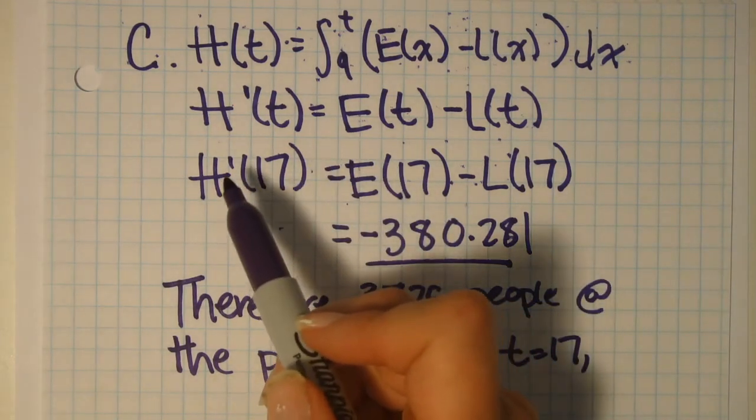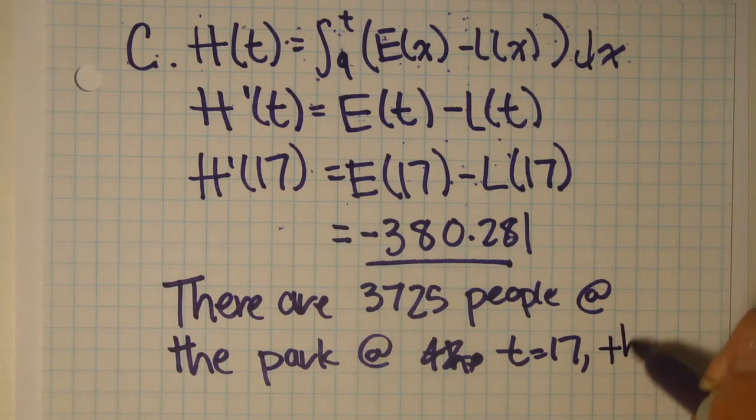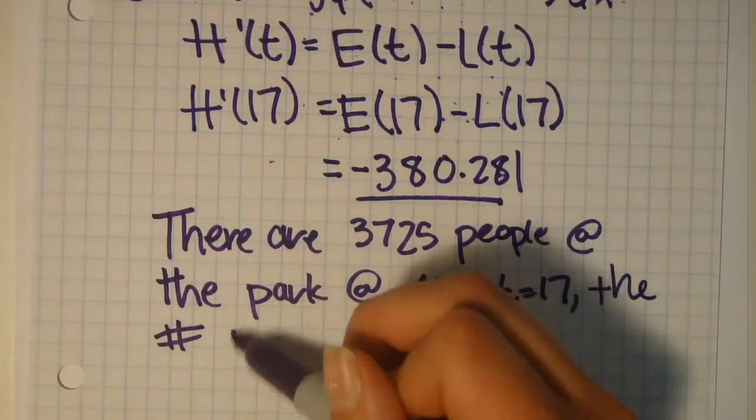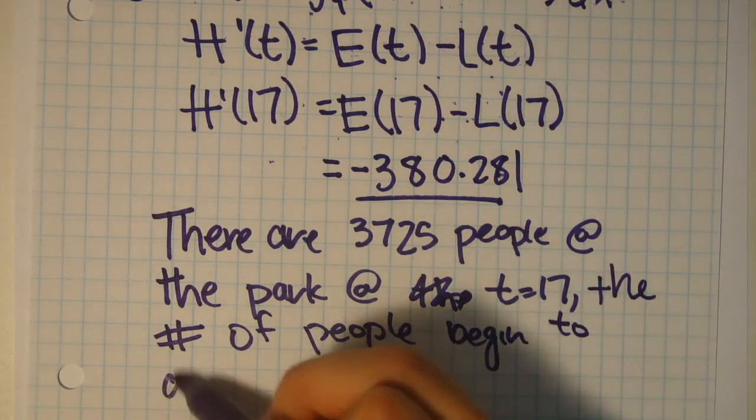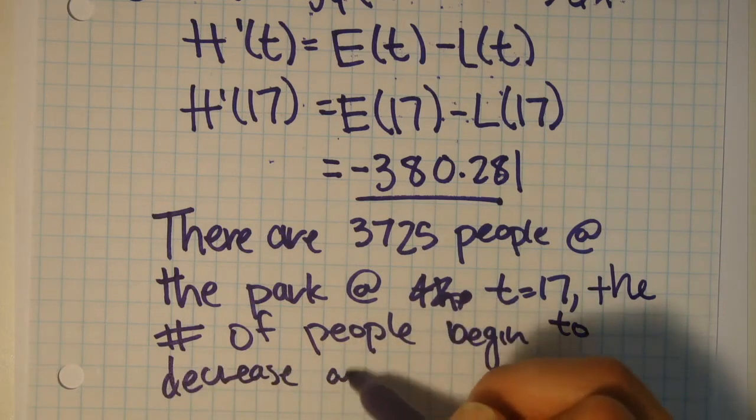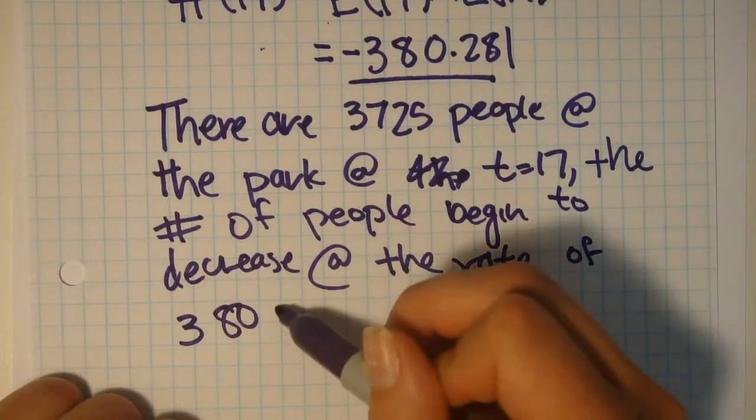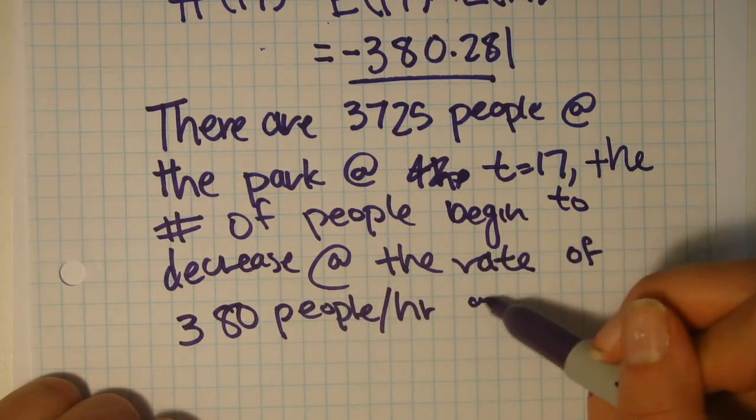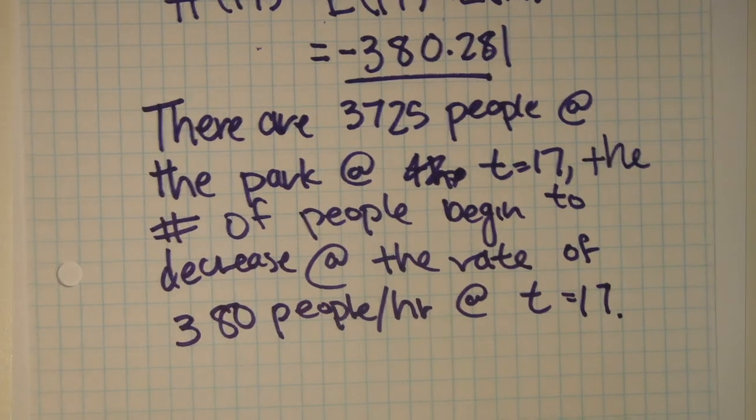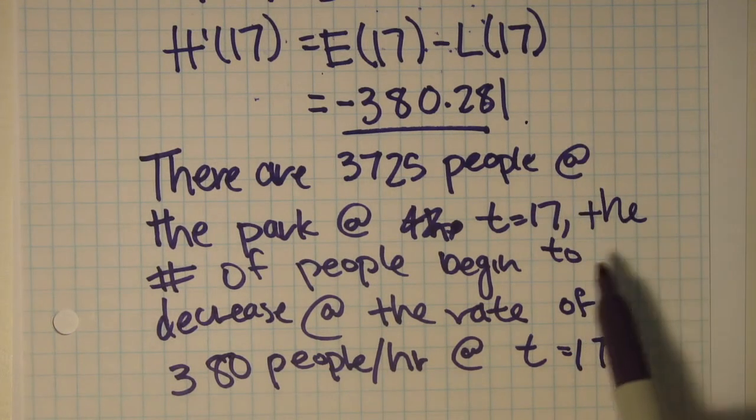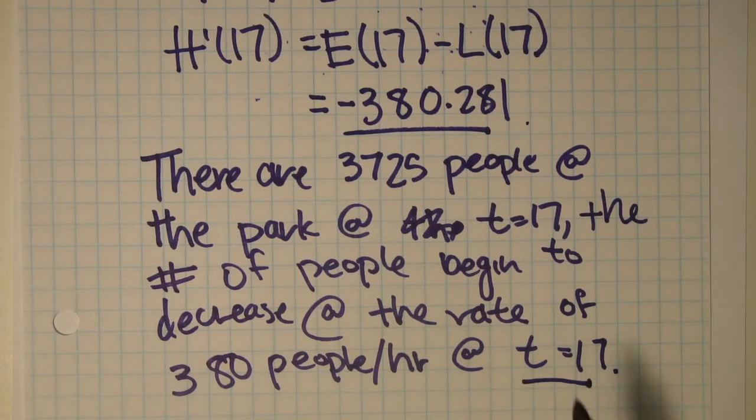And since the derivative gets the rate and our rate is negative, we know that the amount of people is decreasing. So we can write that the number of people begin to decrease at the rate of 380 people per hour at t equals 17. And that is our entire statement. For this problem, you get 1 point for the value and 2 points for the meaning. And also you get docked off 1 point if you do not state t equals 17. So once again, make sure you're very clear on all of your answers.